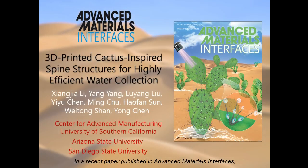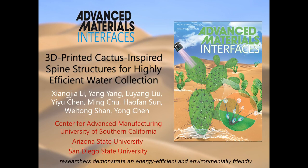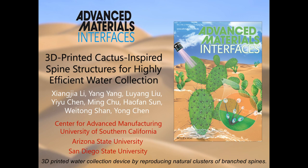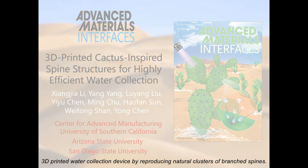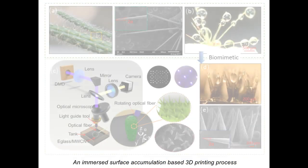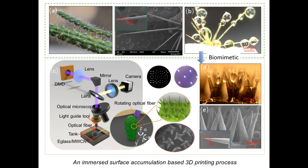In a recent paper published in Advanced Materials Interfaces, researchers demonstrate an energy-efficient and environmentally-friendly 3D-printed water collection device. By reproducing natural clusters of branched spines, an immersed surface accumulation-based 3D printing process has been developed for the printing of artificial spines.